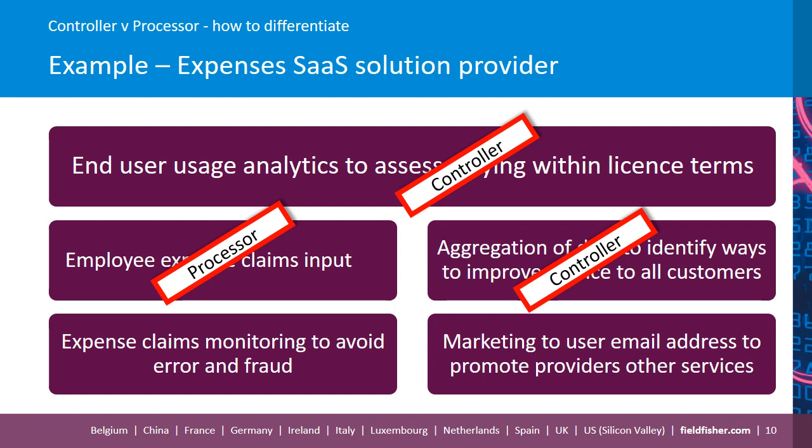Looking to the box on the bottom left-hand side of the screen, there's also a functionality within this solution where some monitoring takes place — to try to detect when there are errors, such as a duplicated expense claim by accident, or even if there's potential fraud taking place. This is part of the service that's provided to the customer, and it does involve processing personal data because it's monitoring what's being input and by whom. But as it's part of the service provided and will be done under the instructions of the customer — in accordance with the service terms — this is a customer purpose, not the service provider's purpose for use of the data. So in this case, the service provider will be the processor, and it's the customer that will be the controller.